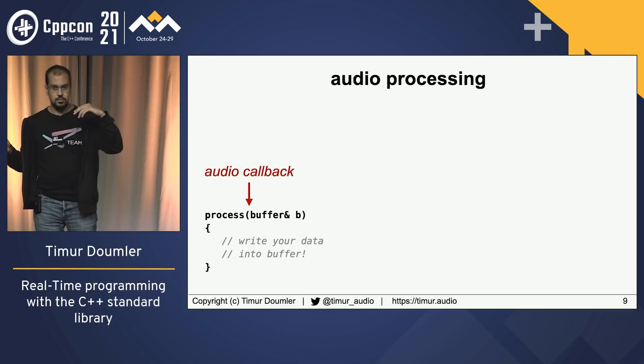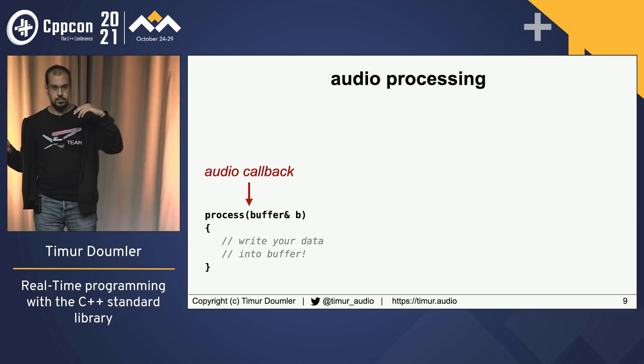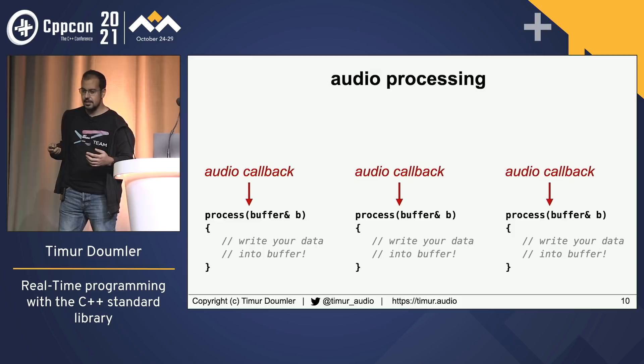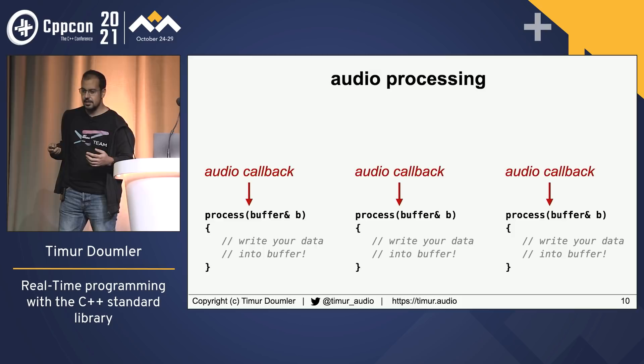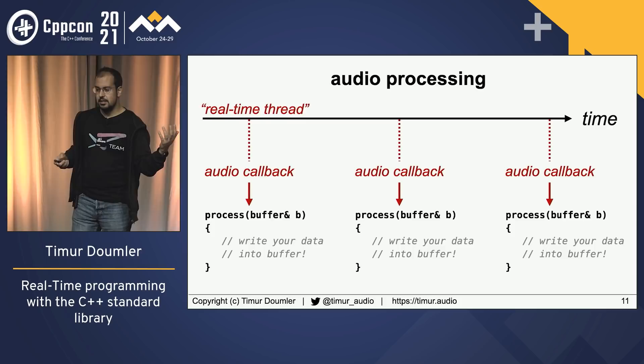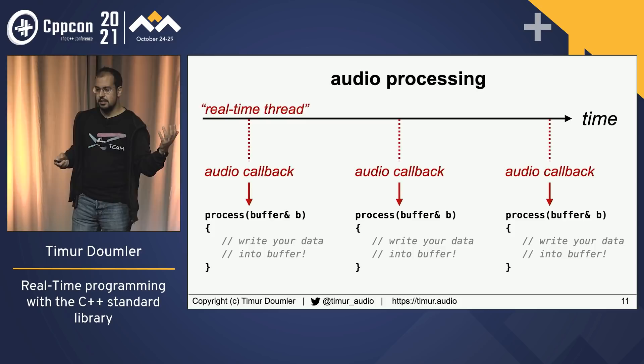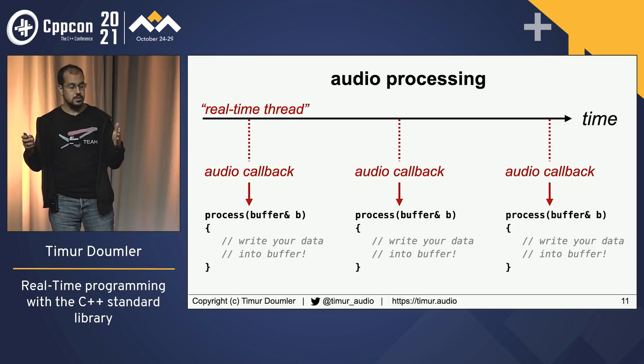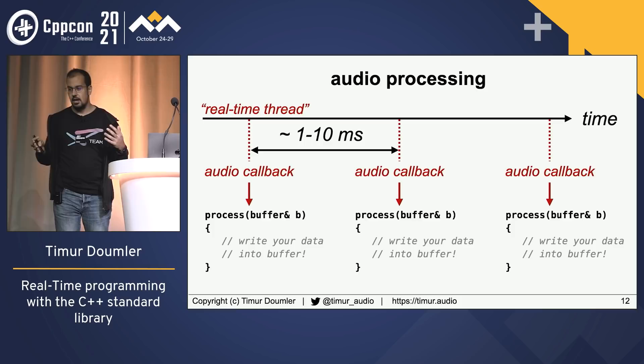Basically, you get a callback from your sound card called something like 'process'. You get a buffer and need to write all your audio data into it, which is then sent out to the speakers. You get repeated audio callbacks on a high-priority thread — what we also call the real-time thread — and these callbacks come at regular intervals. The time between two subsequent callbacks, depending on buffer size and sample rate, is typically somewhere between one and ten milliseconds.